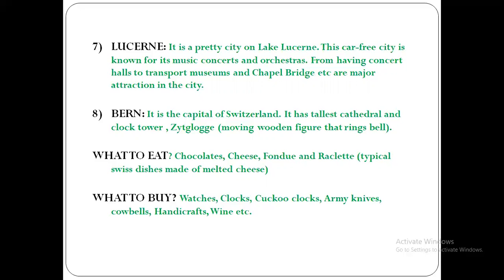The last topic on page number 87 is about what to eat and what to buy. Switzerland is famous for its chocolates and various kinds of cheese. There are typical Swiss dishes made of melted cheese and dishes made of grated and fried potatoes. For what to buy: from watches to clocks, Switzerland is known for them. Many tourists also buy cuckoo clocks. Other commonly bought items are Swiss army knives, cowbells, handicrafts, chocolates, cheese, and wines. This was all about the chapter — the chapter is now completed.